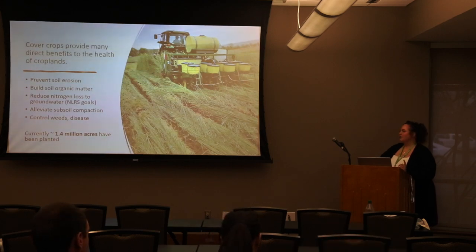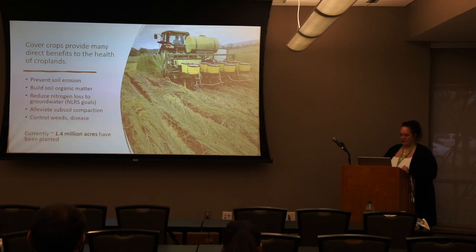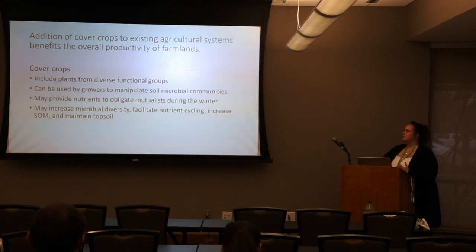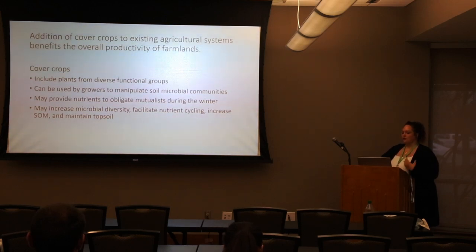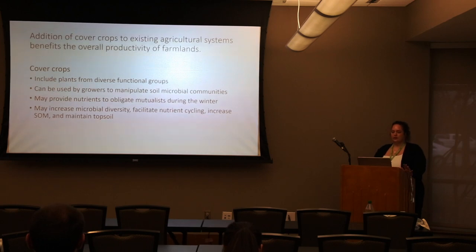Currently in Illinois there are about 1.4 million acres of cover crops planted, which sounds great, but that's actually only about 3% of our farmland in the state — so there's definitely room for improvement. Growers can choose cover crops from diverse plant functional groups like grasses, legumes, and brassicas to help manipulate the soil microbial community.